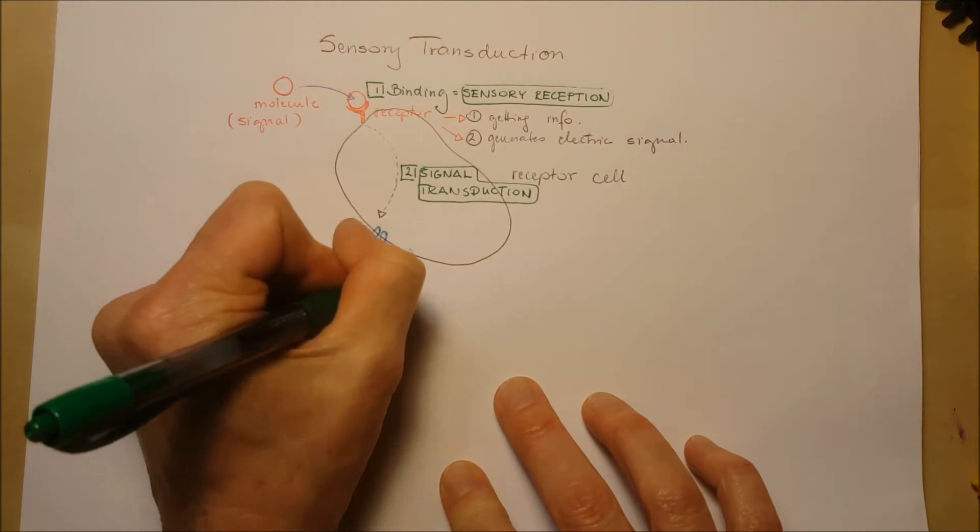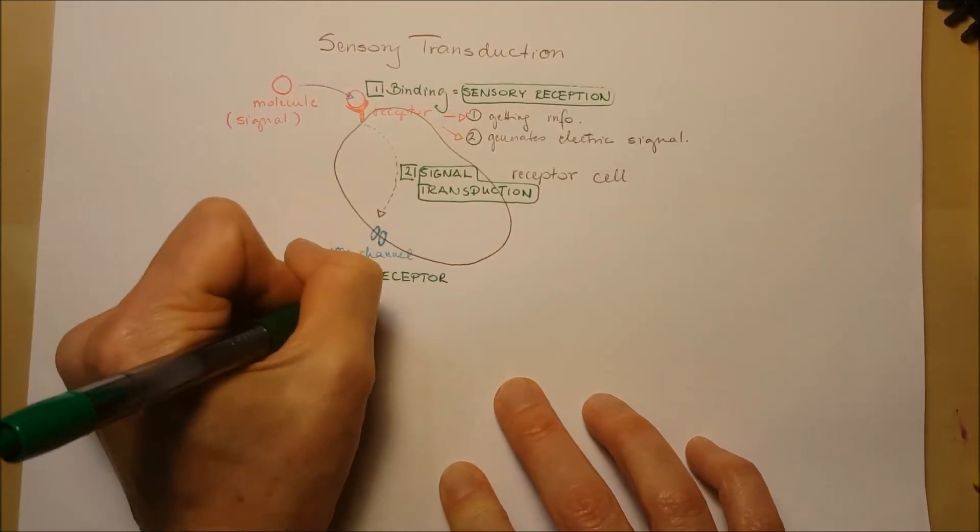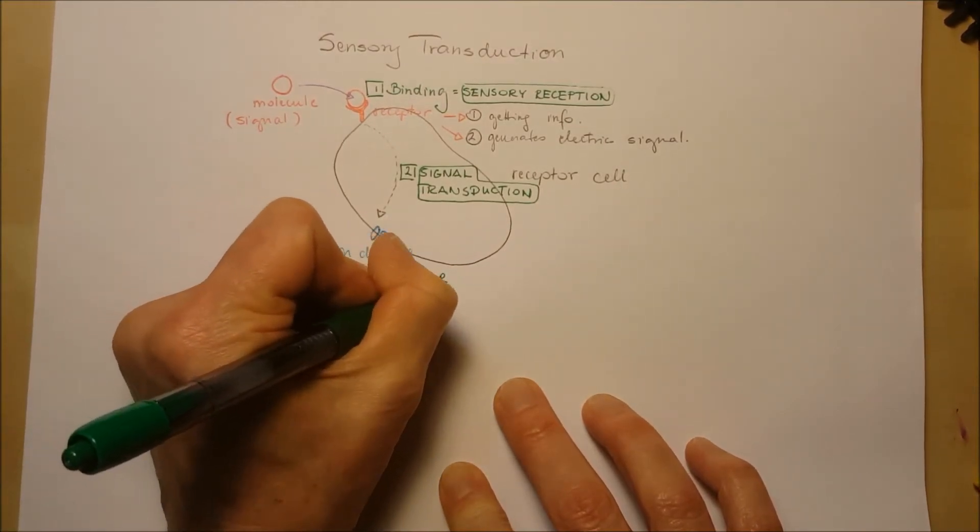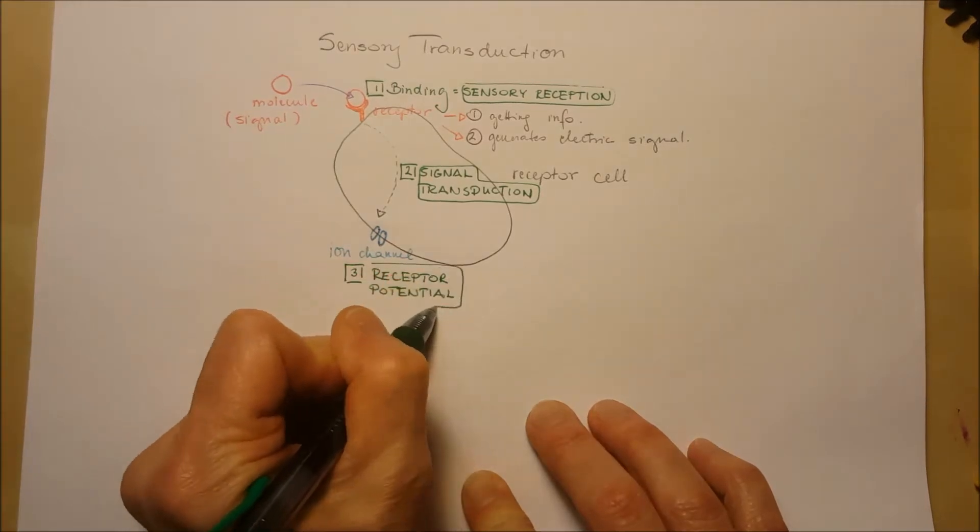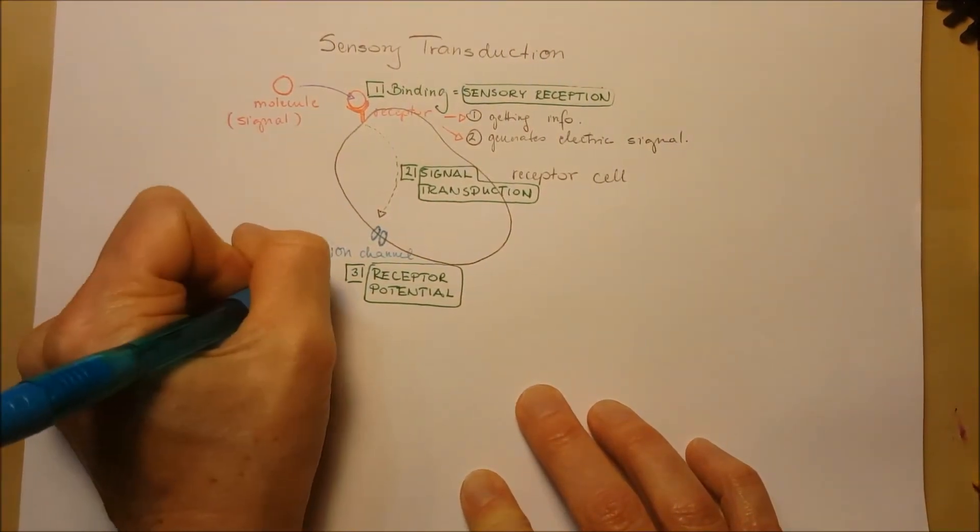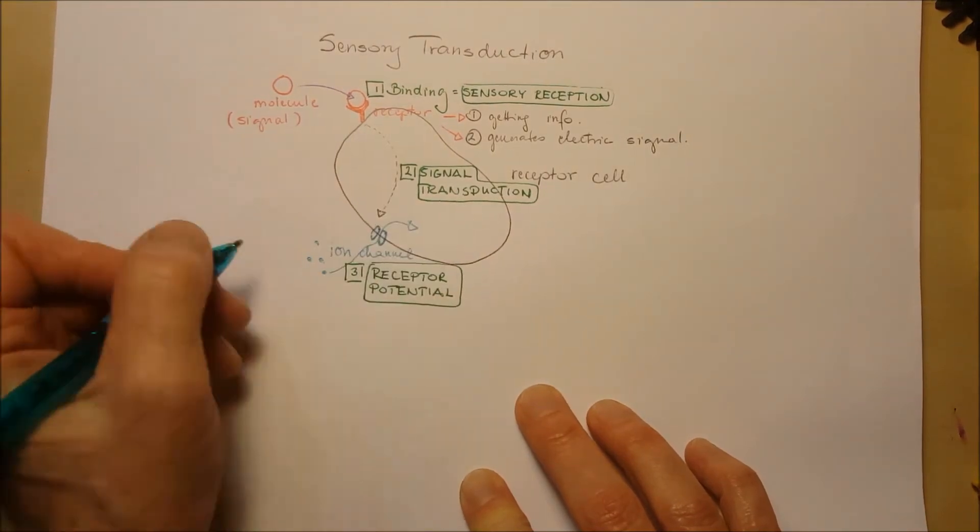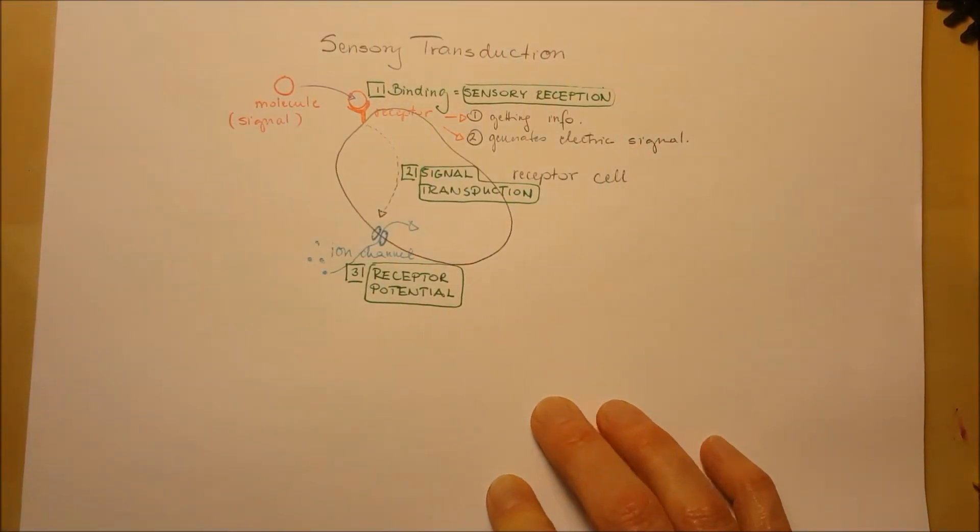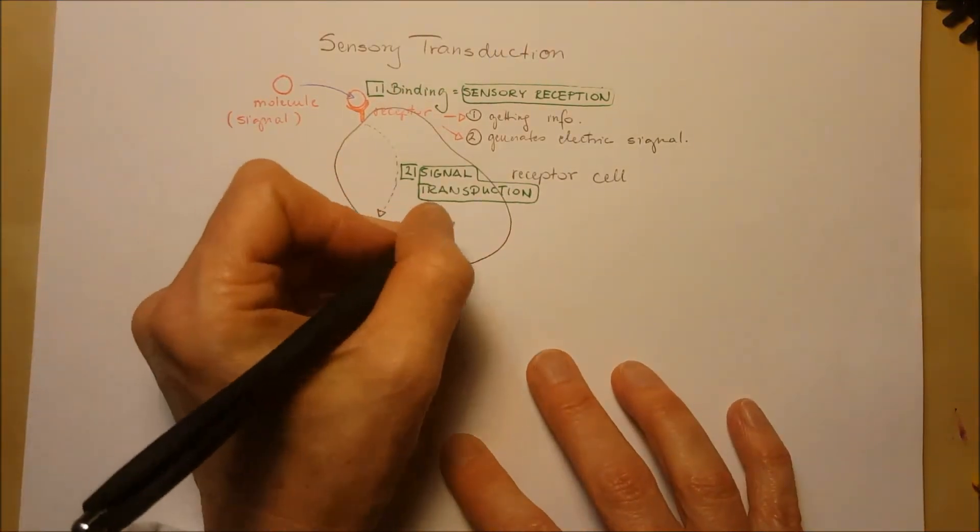Step three is receptor potential. So the receptor will have a potential that varies in strength, depending on how long the ion channel is going to be open and how much ion can get into the receptor cell.